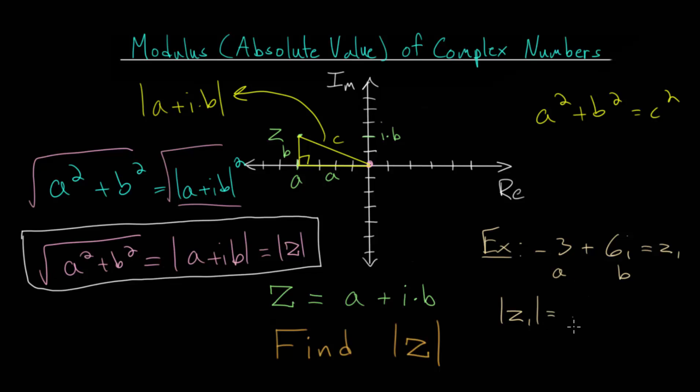Finding the absolute value or the modulus of z1, we just plug everything into our formula. We have a squared, which is minus three squared plus b squared, or six squared. And simplifying, minus three times minus three is positive nine. Six times six is 36.